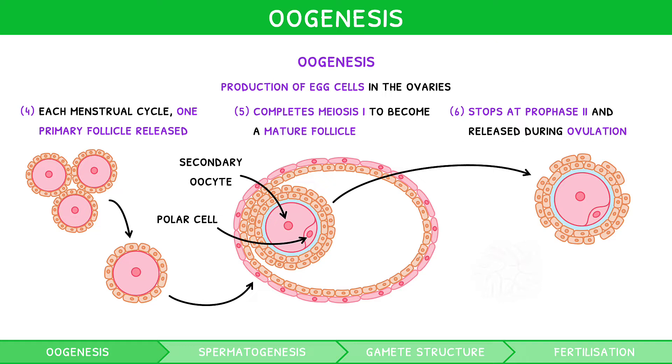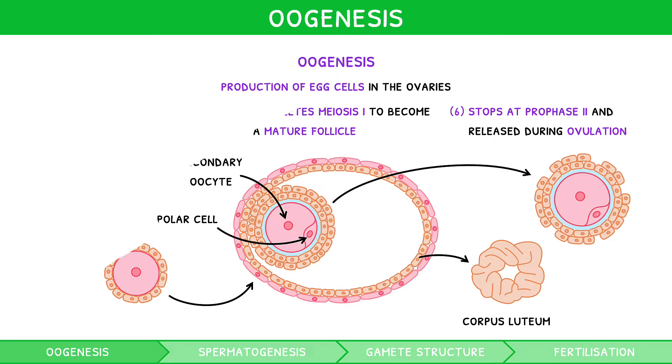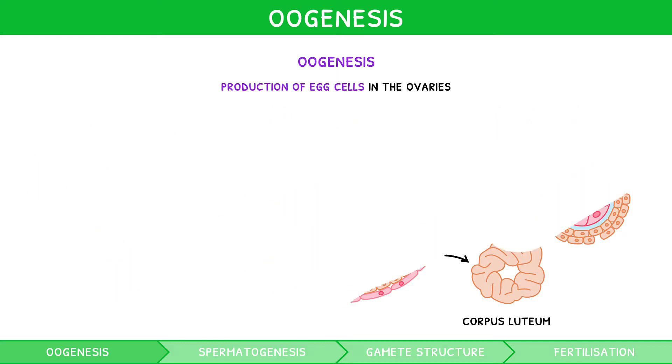The remaining follicle cells then form the corpus luteum. You should practice labelling these stages on a diagram.